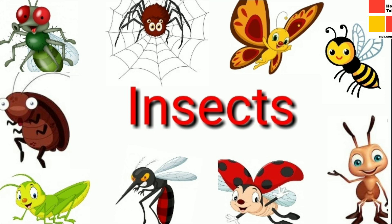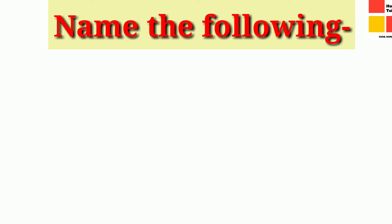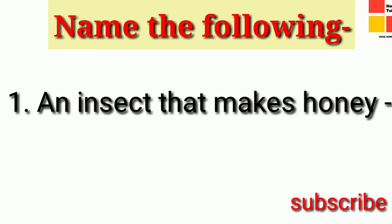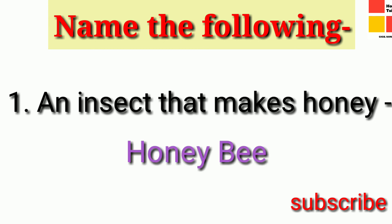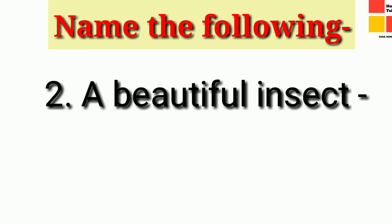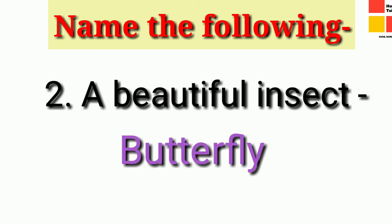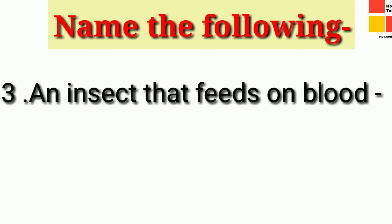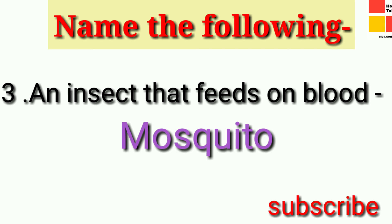We have studied about some insects and now we are moving to question time. I am going to ask you to name the following. First one: an insect that makes honey — yes, it is honeybee. Next one: a beautiful insect — yes, it is butterfly. Next one: an insect that feeds on our blood — yes, it is mosquito.